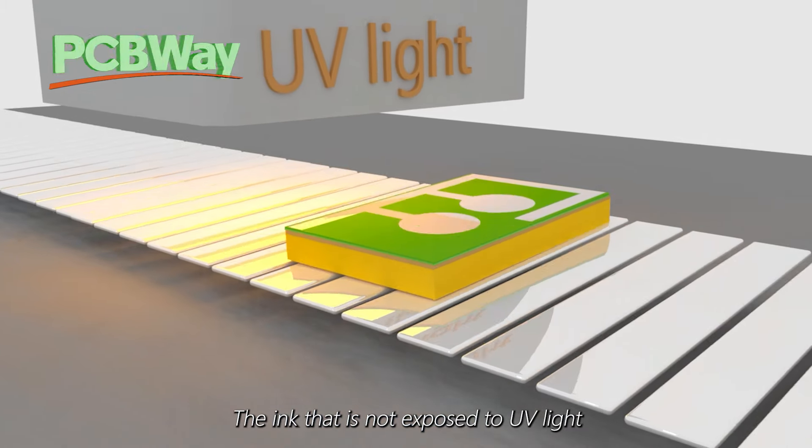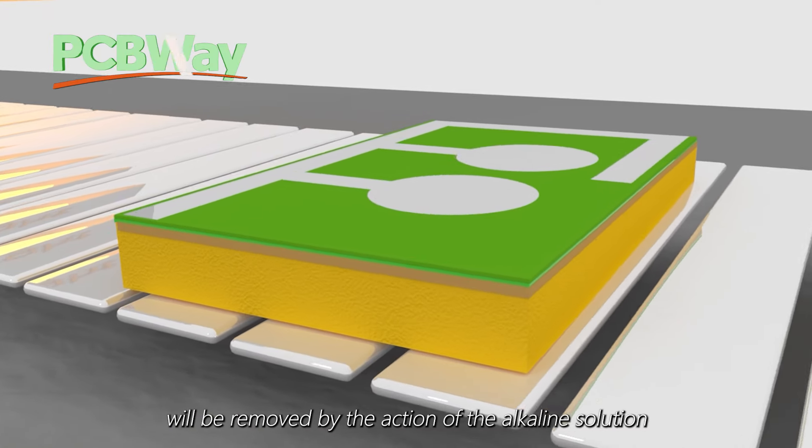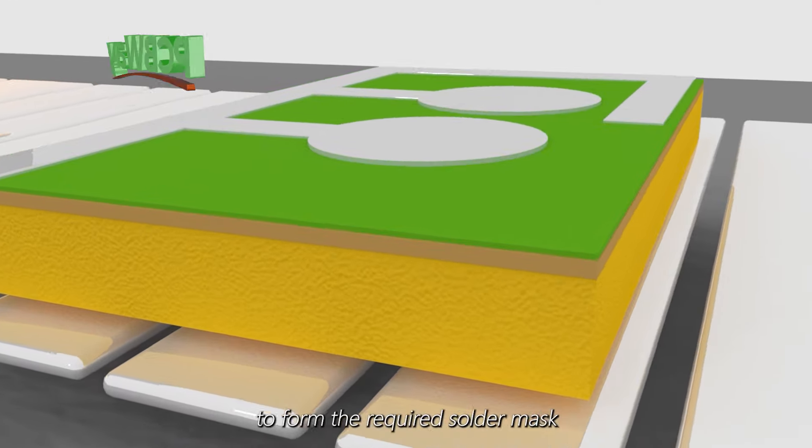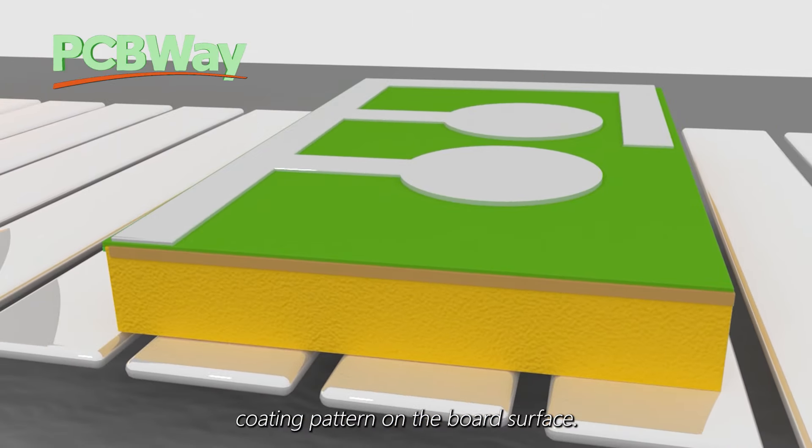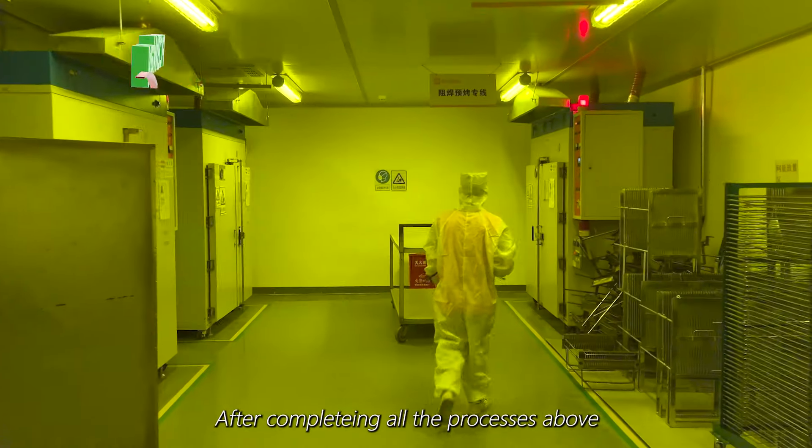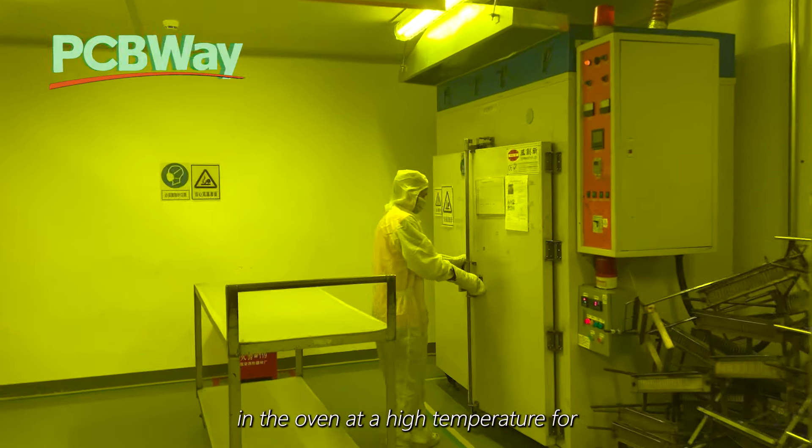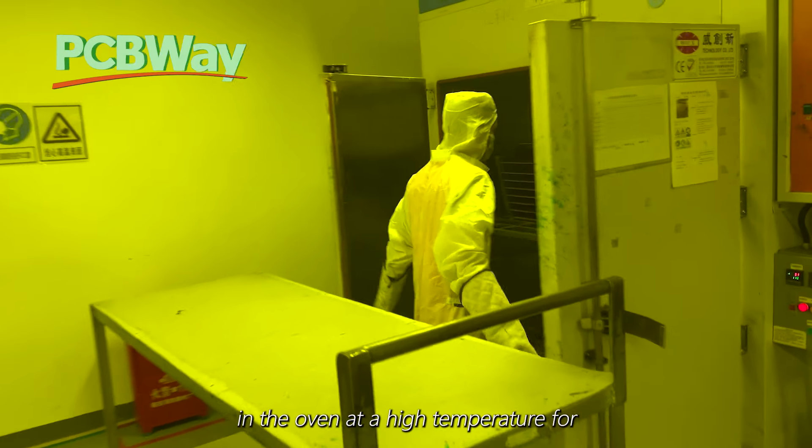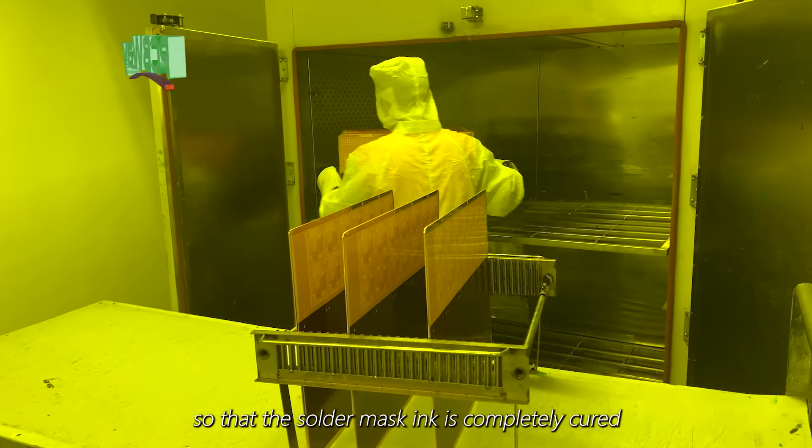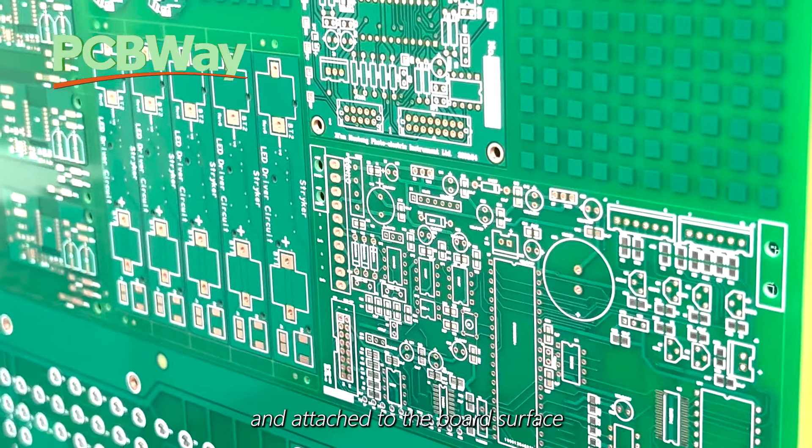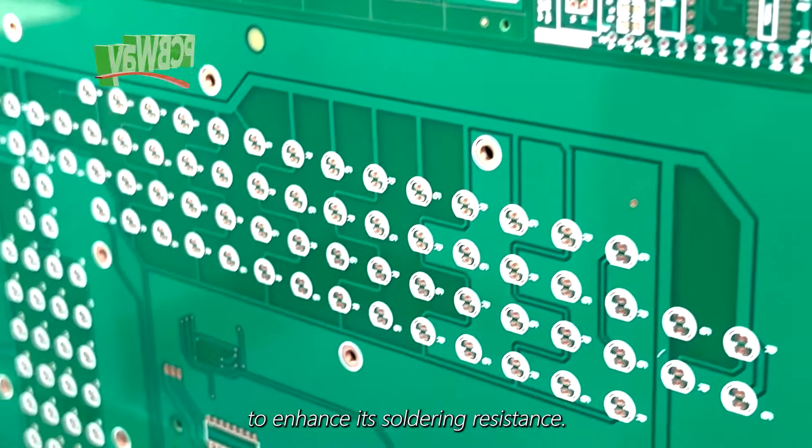The ink that is not exposed to UV light will be removed by the action of the alkaline solution to form the required solder mask coating pattern on the board surface. After completing all the processes above, the board is baked in the oven at a high temperature for 40 to 60 minutes, so that the solder mask ink is completely cured and attached to the board surface to enhance its soldering resistance.